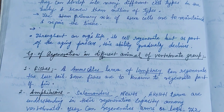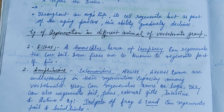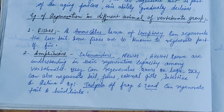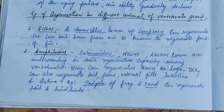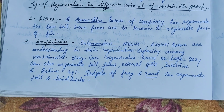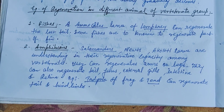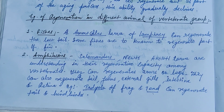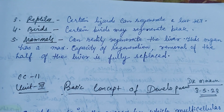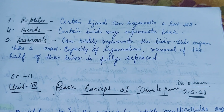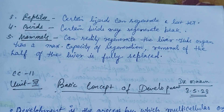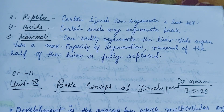Examples of regeneration in different vertebrate animals: in fishes (Pisces), ammocoetes larvae of lamprey can regenerate the lost tail, and some fishes are known to regenerate parts of fins. In amphibians, the salamanders, mudpuppies, and axolotl larvae can regenerate. Reptiles, birds, and mammals are also included in the vertebrate group. This is all about regeneration in vertebrates — thank you and keep watching.